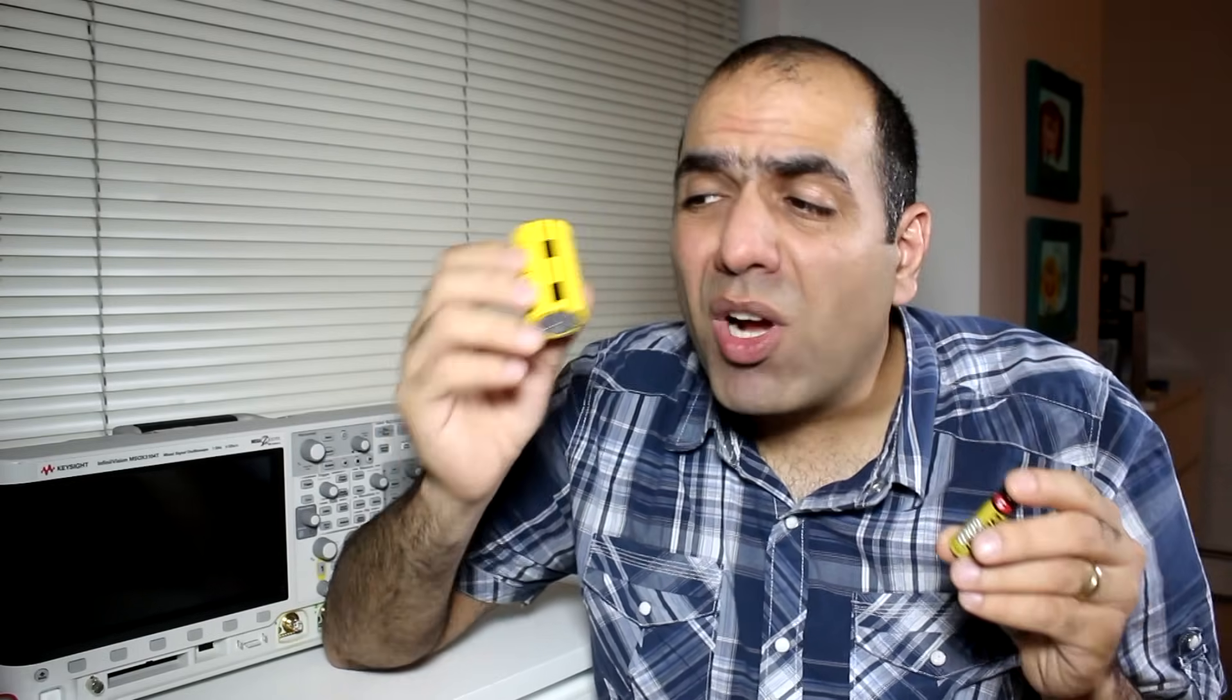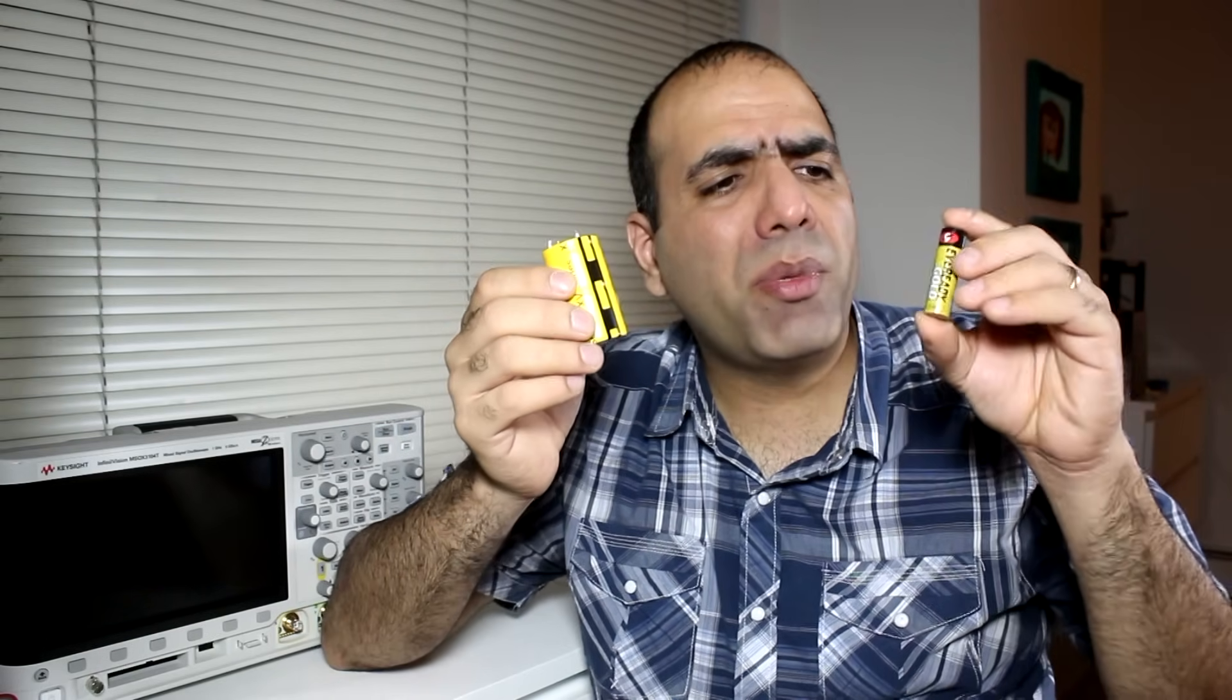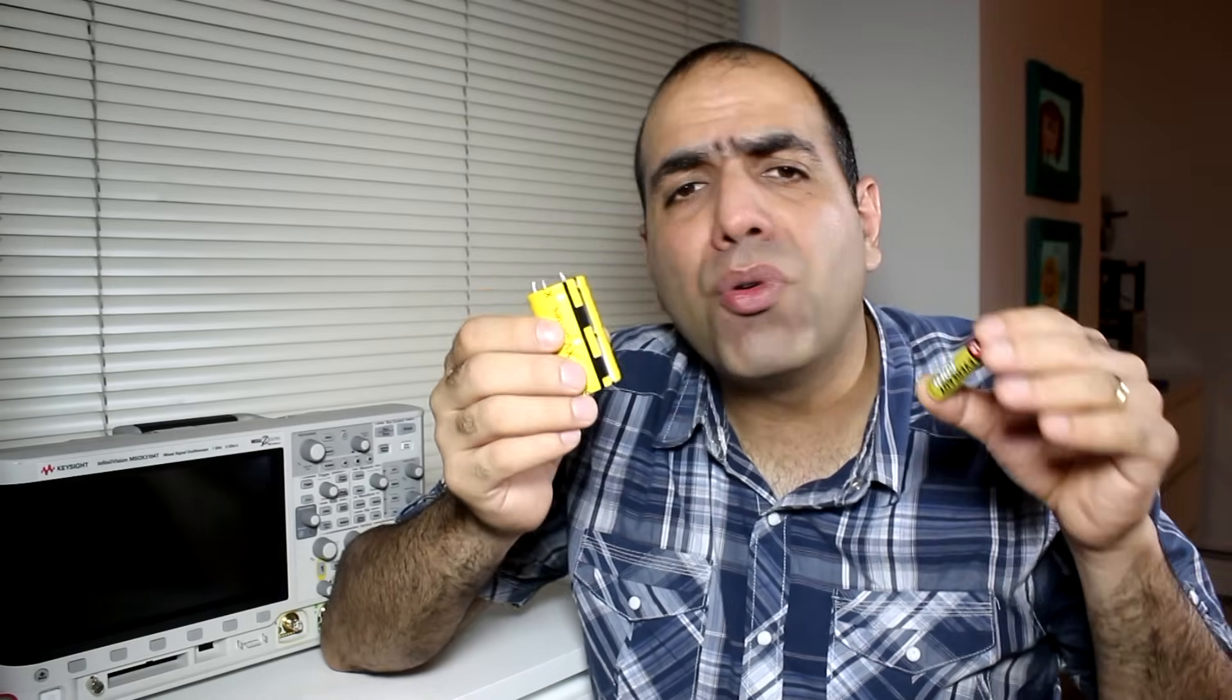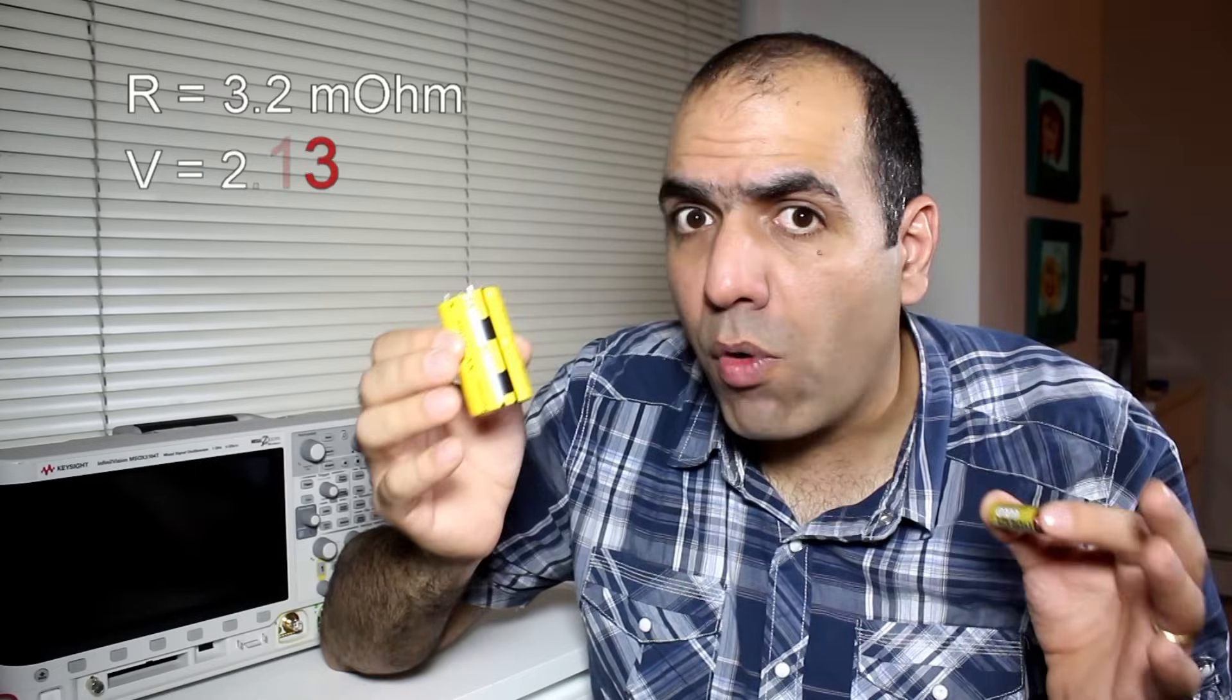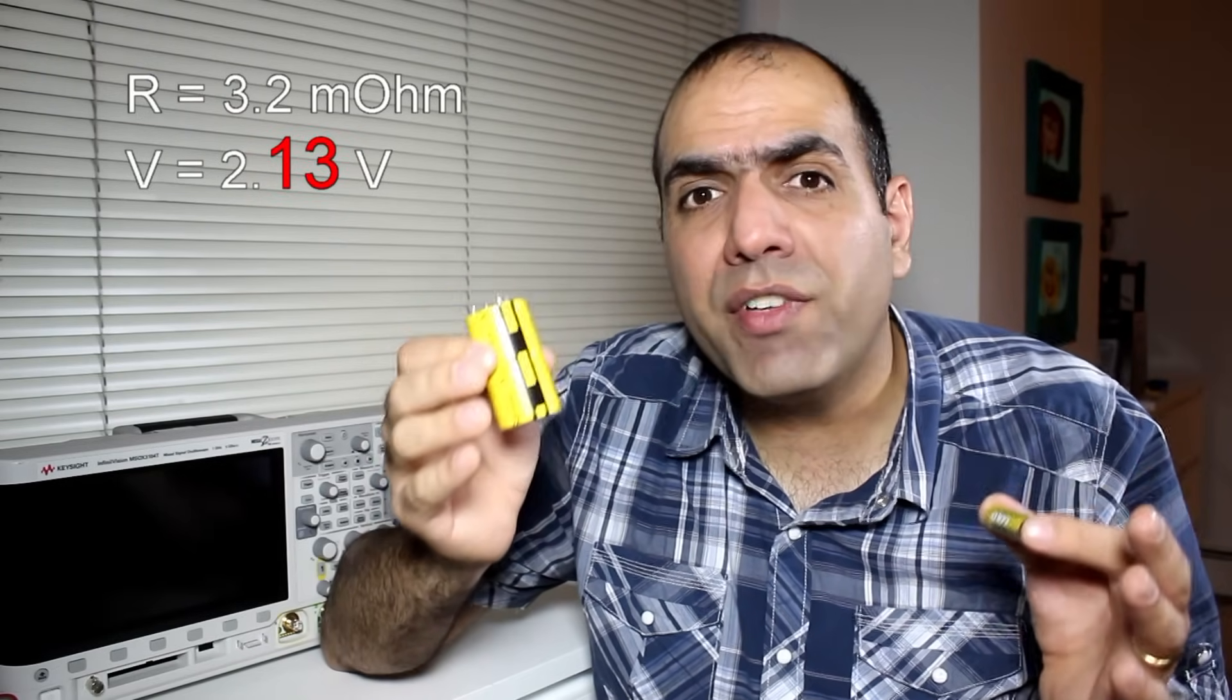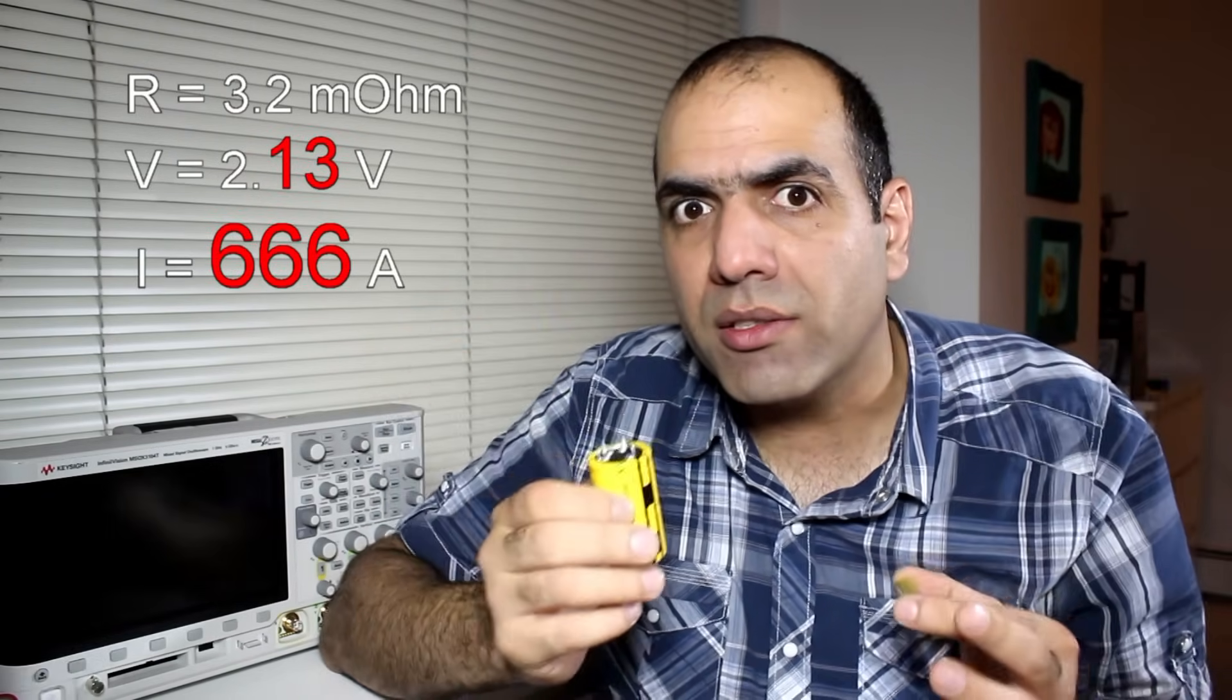The upside, this supercap has a much smaller series resistance of 3.2mΩ compared to a typical double-A battery which is around 200mΩ. So, if I charge this to 2.13V and short it, it can deliver up to 666A of current.